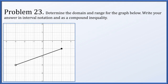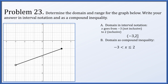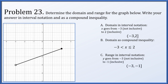In problem twenty-three, determine the domain and range of a graphed function in interval notation. The domain: x goes from negative 3 (open dot, not included) to 2 (filled dot, included), giving the interval negative 3 to 2 with an open bracket and closed bracket. The range: y goes from negative 3 (not included) to negative 1 (included), giving the interval negative 3 to negative 1 with open and closed brackets respectively.